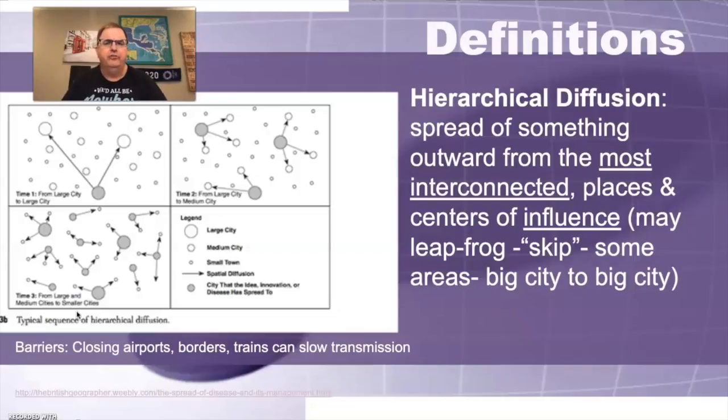And then it leapfrogs or skips some areas from big city to big city. And so on the graphic on the left, we can see this. So right over here, we can see here's the city. And then it leapfrogs all the way over here to another big city. And it skips all of these cities. Usually that would have happened through an airplane or interactions of people who travel between these places. And these other places are skipped.